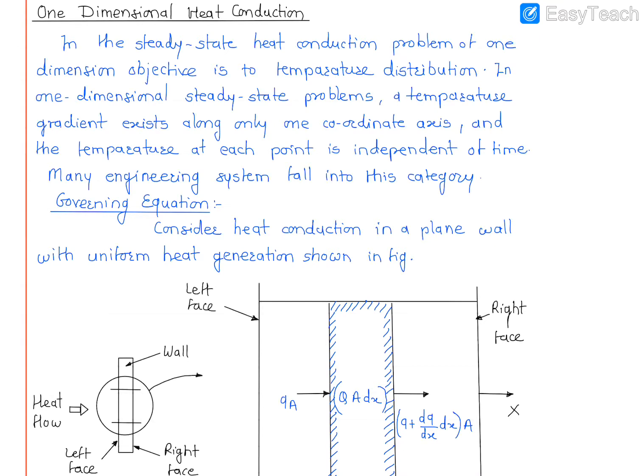Hello students, now we will see one-dimensional steady-state heat conduction. In the steady-state heat conduction problem of one dimension, the objective is to find out the temperature distribution. In one-dimensional steady-state problems, a temperature gradient exists along only one coordinate axis in the x-direction, which is why we call it one-dimensional heat conduction.